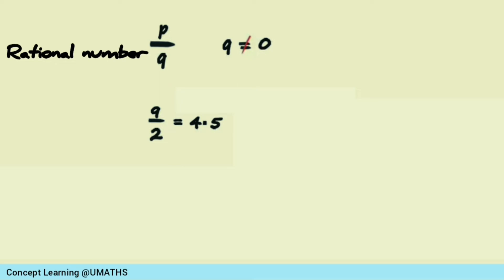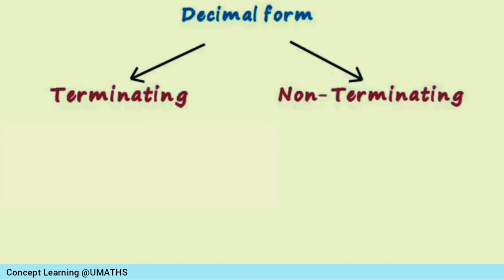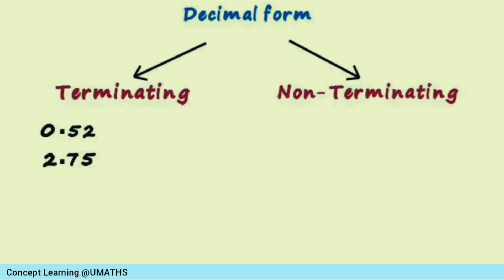Here, 9 by 2 is a rational number which can be written in the form of 4.5 — this is the decimal form of a rational number. Note: every rational number can be expressed in a decimal form. The decimal forms can be categorized into terminating and non-terminating decimal forms. For example, 0.52 and 2.75 are terminating decimal forms.